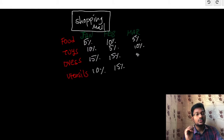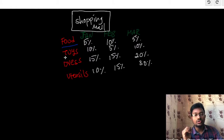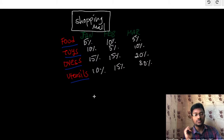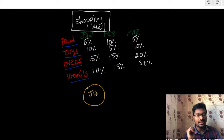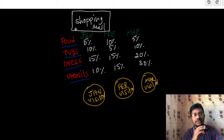For March, the tax percentages are 5%, 10%, 20%, and 30% respectively. So for each month the tax is getting varied. We can consider food, toys, dress, and utensils as elements, and we can consider three visitor objects — one for each month.